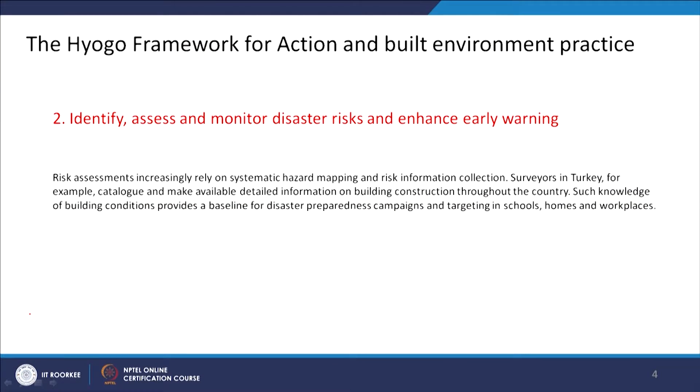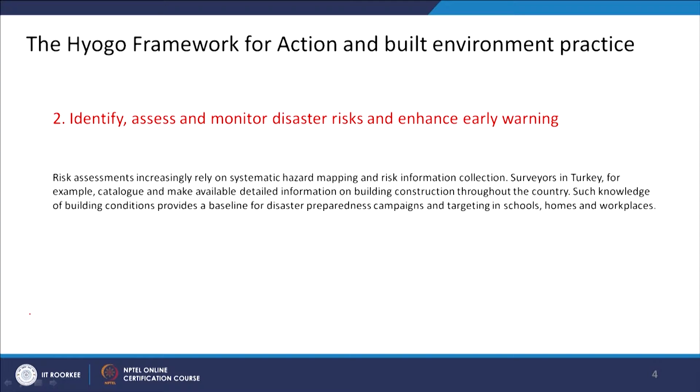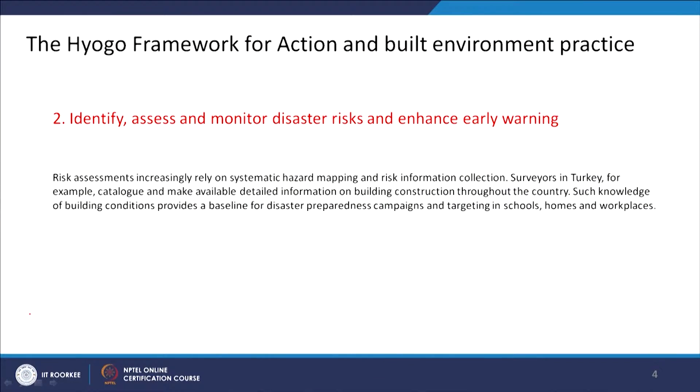One has to look at the risk assessment process — identify, access, assess and monitor disaster risks and enhance early warning. This relies on systematic hazard mapping and risk information collection. Historical layers of risk tell us which areas are prone to inundation. In Turkey, surveyors catalog and make available detailed information on building construction throughout the country, identifying which regions are affected by earthquakes because the fault line goes through them. Such catalogs help local authorities work on disaster preparedness plans targeting schools, homes, and workplaces.